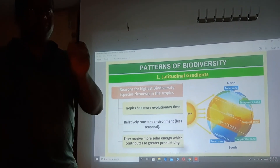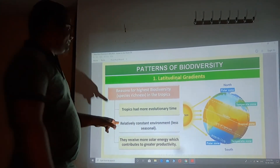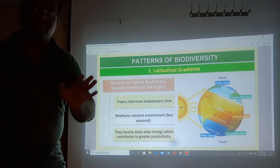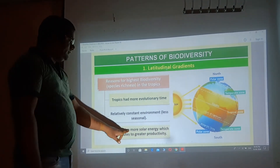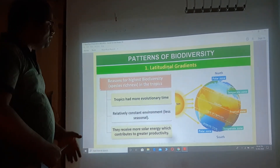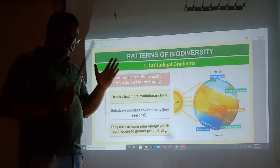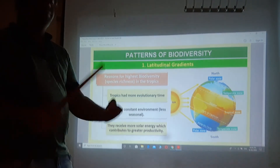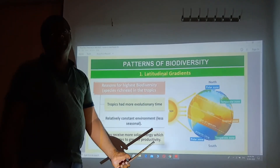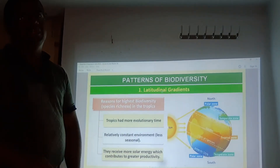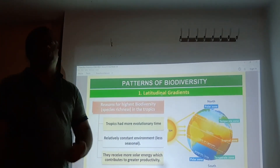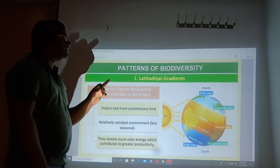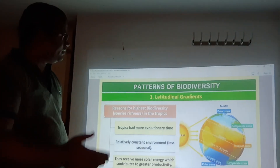The relatively constant and less seasonal environment makes the tropical area a favorable area for the growth and development of plant and animal species. Additionally, tropical regions receive more solar energy, which contributes to greater productivity at the tropics. The tropical area receives more solar radiation, and because of that it produces a greater level of productivity. On the basis of this productivity, a good life can develop. Because of these reasons, the tropics have the greatest species diversity.